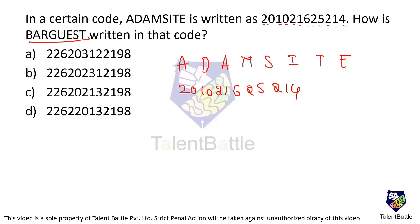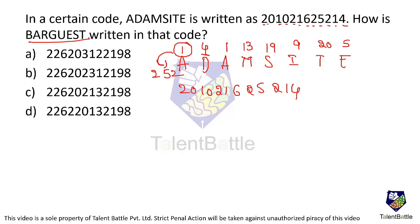First, let us give the numberings for the alphabets. A is 1, B is 4, A again is 1, M is 13, S is 19, I is 9, T is 20, and E is 5. Now let's observe how these numbers relate to the coded sequence: 2, 0, 1, 0, 2, 1, 6, 2, 5, 2, 1, 4. If A becomes 2, that's plus 1. But then B is 4 and should become 5, yet the sequence doesn't show a simple plus-1 pattern in order.